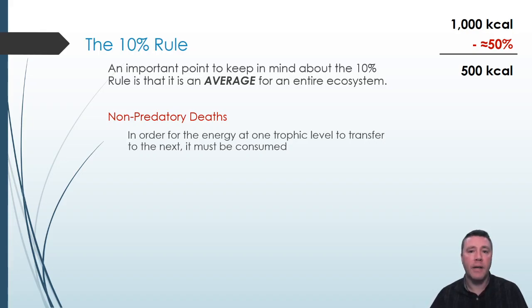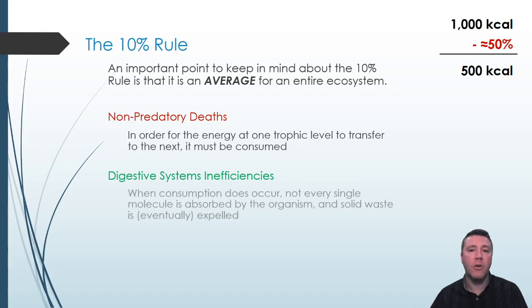The next factor is called digestive system inefficiencies. If the cheetah does capture the gazelle and eat it, not every single molecule consumed is absorbed into the cheetah's body through its intestines. There's quite a bit of material that comes out the back end of the cheetah in the form of feces. On average, only about 50% of the energy content of food is effectively absorbed by an animal's digestive system.